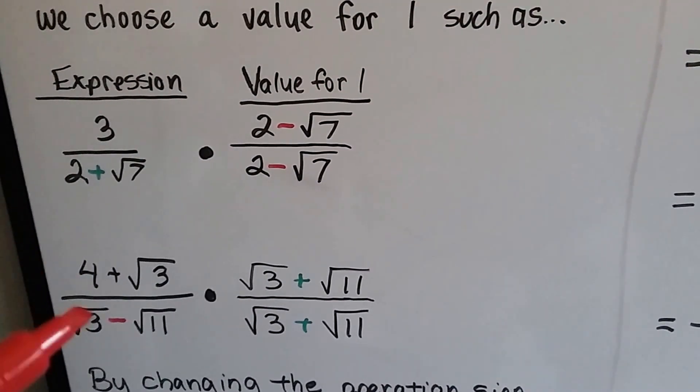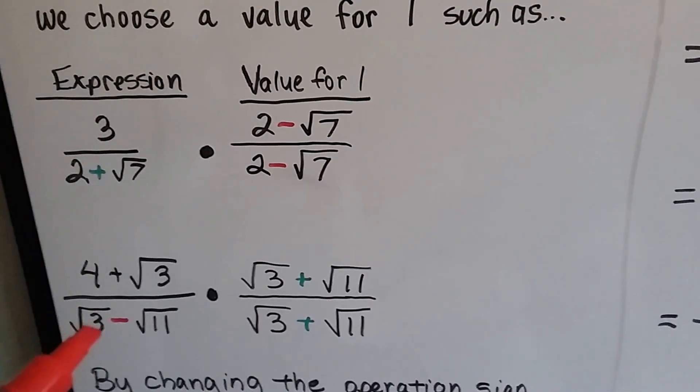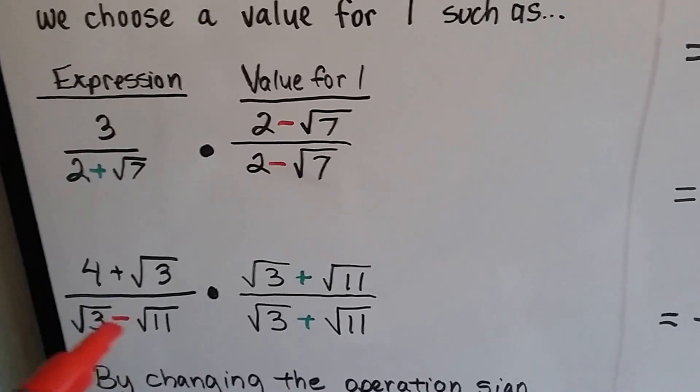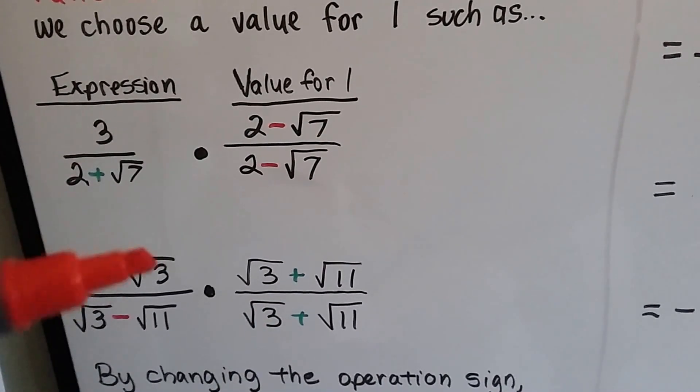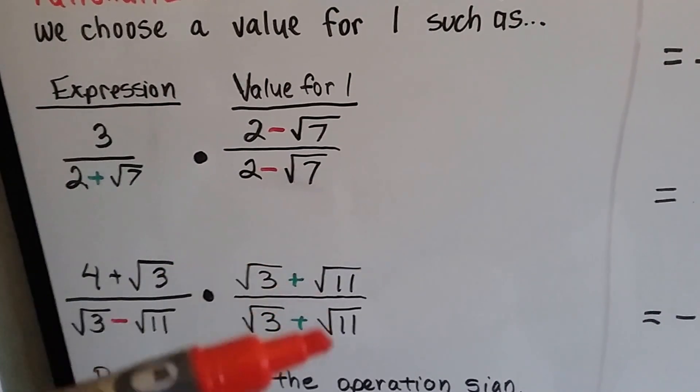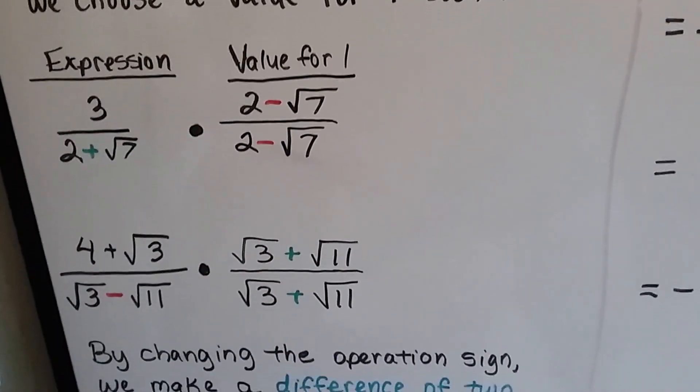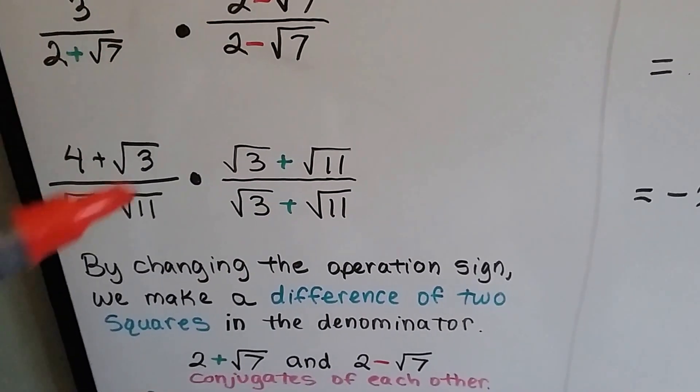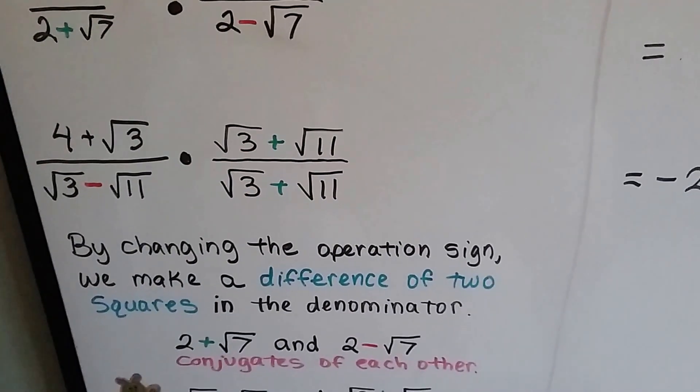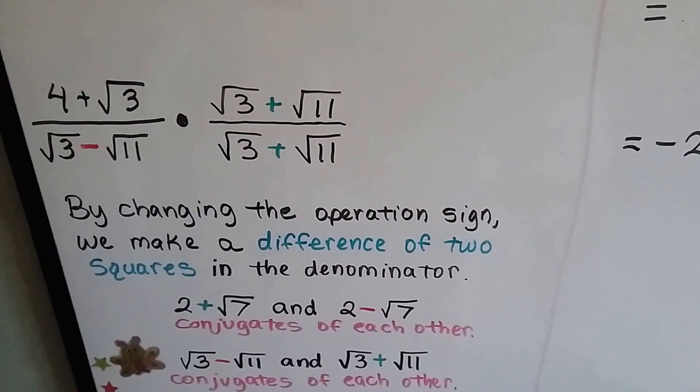In this one, we took the square root of 3 minus the square root of 11, we put a plus sign in the middle, and we multiply the numerator and denominator by this as a 1. Now by changing this operation sign and making it go from a plus to a minus or a minus to a plus, we make a difference of two squares in the denominator.